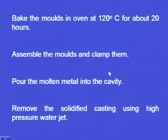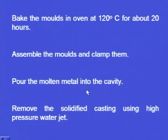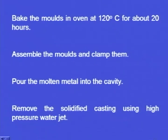After baking is over, we assemble the moulds and clamp them. Then we pour the molten metal into the cavity; it flows in, fills, and after some time solidifies. After solidification, we remove the solidified casting using a high pressure water jet to remove it from the plaster moulds.